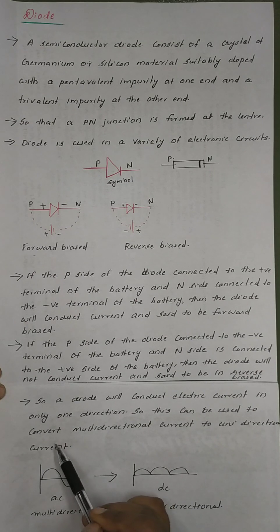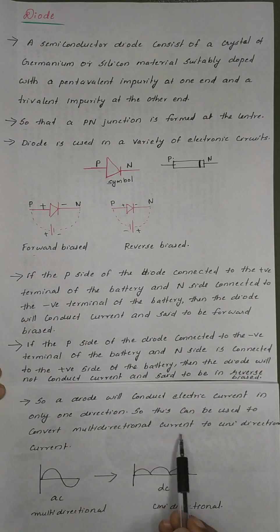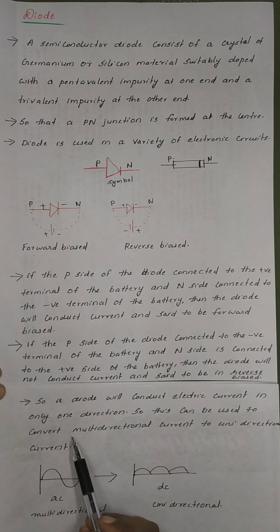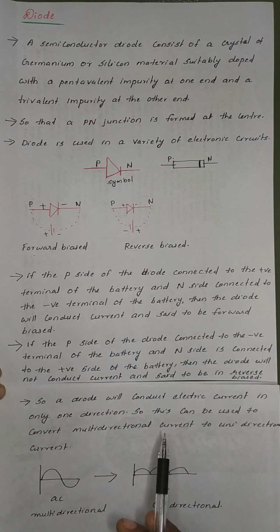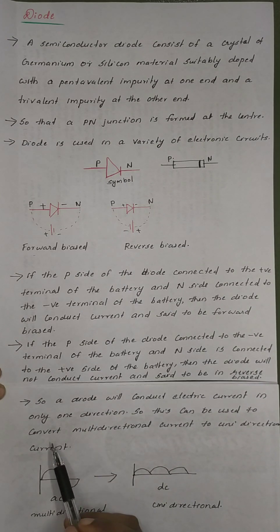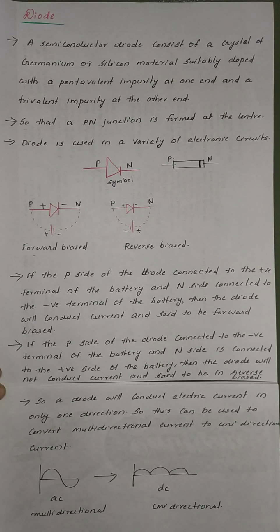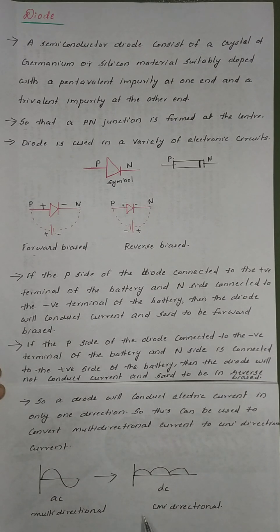A diode will conduct electric current in only one direction. So this can be used to convert multidirectional current to unidirectional current. This is the property of a diode — it can convert multi-directional current into a unidirectional direct current.